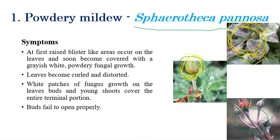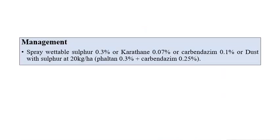This automatically causes the plant to fail to fetch market price. The powdery growth covers all parts of the rose plant — leaves, buds, and twigs. Management includes spraying of wettable sulfur 0.3%, or Karathane 0.07%, or Carbendazim 0.1%, or sulfur dusting at the rate of 20 kg per hectare to manage this disease efficiently.